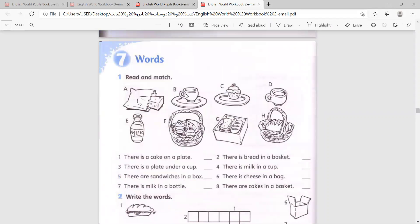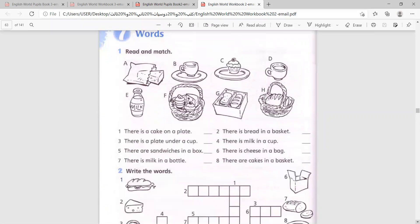Take a look at question number one, read and match. All you need to do is look at the pictures with the letters. Each picture has a certain letter and here we have sentences with numbers. Number one, there is a cake on a plate. Take a look at the pictures. C, cake on a plate. So all you have to do is write the letter.